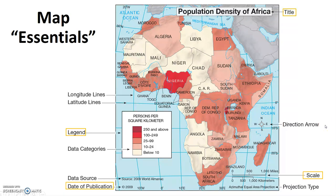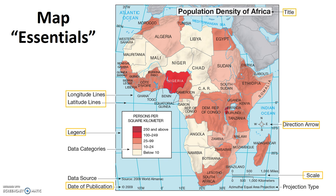Generally, maps will also have some way of showing direction, often a compass rose like the one shown here. Latitude and longitude lines can also help us get a sense of direction, because we know latitude lines run east-west and longitude lines run north-south. Next, every map should have some sort of system for finding location. In this case they've used latitude and longitude, but other systems like alphanumeric or UTM may be used as well.